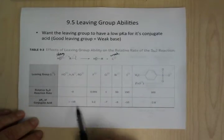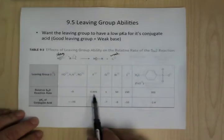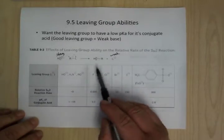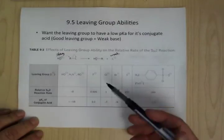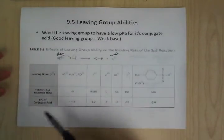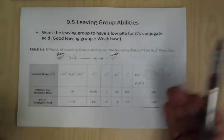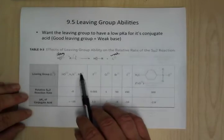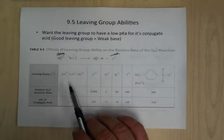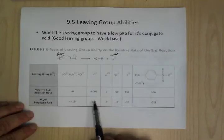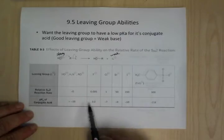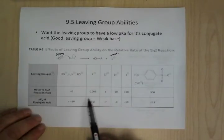You can measure that by looking at the pKa of the conjugate acids of these things. For example, HF is a weak acid. Remember, there's this duality of weak acid, strong base. So OH, NH — those are going to be pretty weak acids, which makes their corresponding negative charges fairly basic, fairly nucleophilic. That makes them really terrible leaving groups.